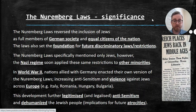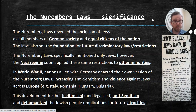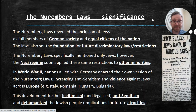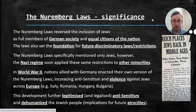The Nuremberg Laws may have only specifically mentioned Jews; however, the Nazi regime soon applied these same restrictions to other minorities — Black people, gypsies, nomads, and other ethnic and religious minorities were soon treated the same way. In World War II, nations allied with Germany enacted their own versions of the Nuremberg Laws, which led to increased anti-Semitism and violence against Jews across the entire continent. People were imprisoned, harassed, injured, and killed in other parts of the world as a result of these laws originating in Germany.